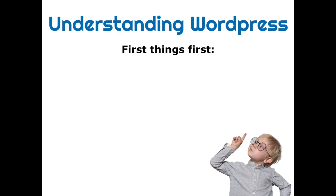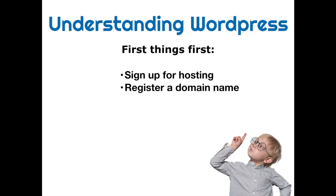In order to have a WordPress website, we need to start with the following three steps: sign up for a hosting package, register a domain name — which is the URL of the website — and of course, install WordPress. Just like you have a computer which holds all of your files and folders and data, this is how the hosting service works. We buy a hosting space in which we will put all of the files, folders, and data that we want to show on our website.